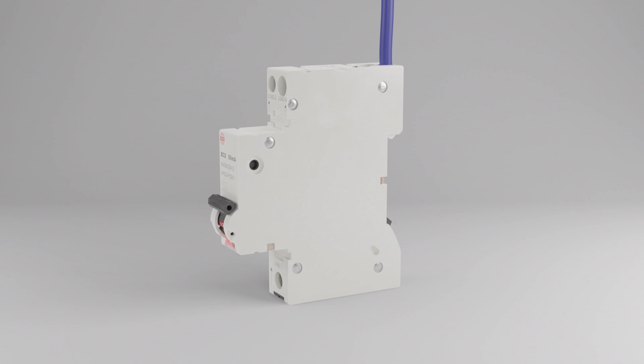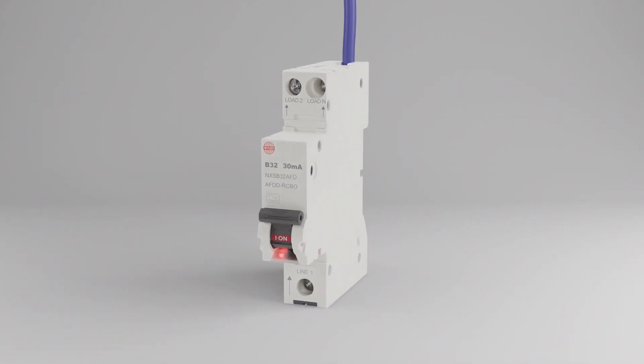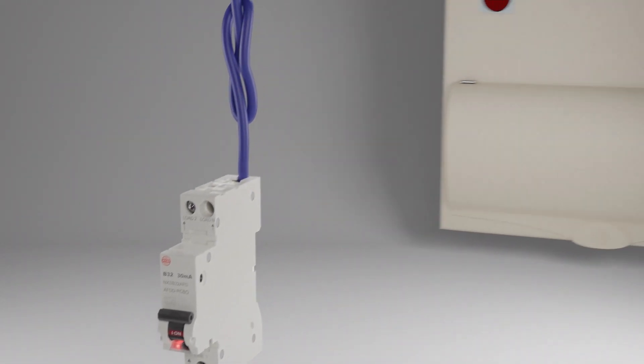The wiring regulations require installations to be designed and constructed so as to protect people and property against risks and danger from arcing, ignition and propagation of fire in electrical installations. Arc fault detection devices will provide additional protection against fire caused by arc faults.